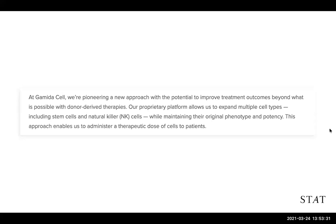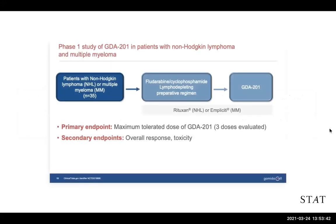Some data was presented last year showing about 19 patients treated with Gamida Cell's product in non-small cell — in non-Hodgkin's lymphoma patients, all heavily pretreated. They gave it in combination with rituximab and showed a 74% response rate, with 68% of those responses being complete responses. Like the MD Anderson study, this is early evidence of disease activity for an NK cell therapy.